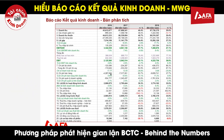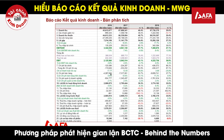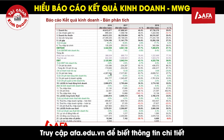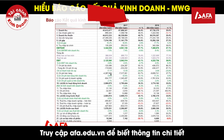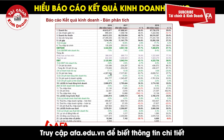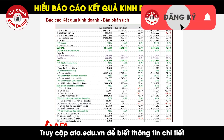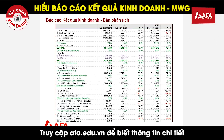Xét về mặt doanh thu, chúng ta thấy rằng doanh thu của công ty này tăng trưởng rất mạnh qua từng năm 2016, 2017, 2018. Năm 2017 tăng trưởng 48,4% so với 2016. Trong năm 2018 tăng trưởng thấp hơn nhưng vẫn cho con số rất cao, đó là 9,6% đối với tăng trưởng tổng doanh thu.